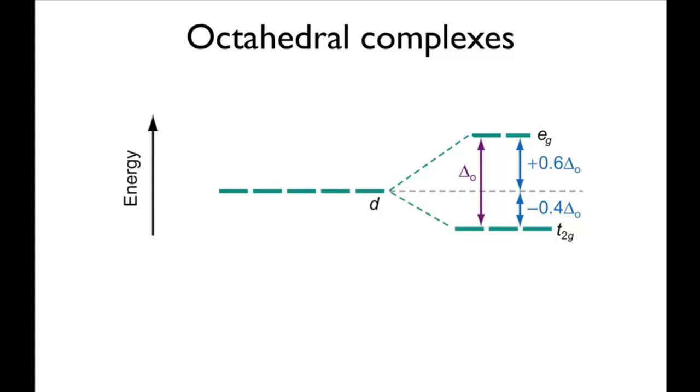The total energy of the five orbitals is the same after this splitting, which means that the T2G orbitals are stabilized by 0.4ΔO, and the EG orbitals are destabilized by 0.6ΔO, where ΔO is the energy gap between the two sets.